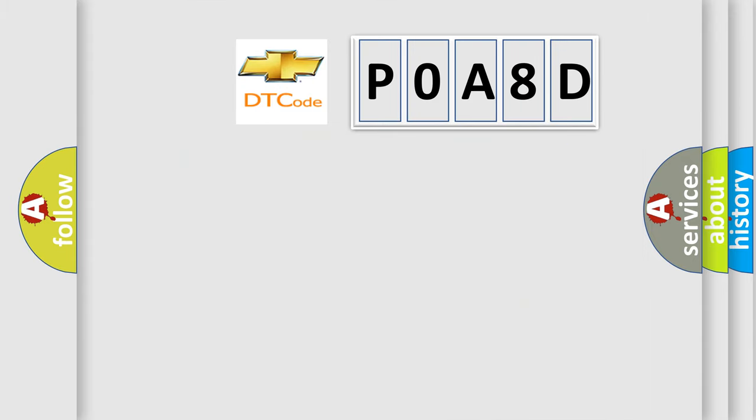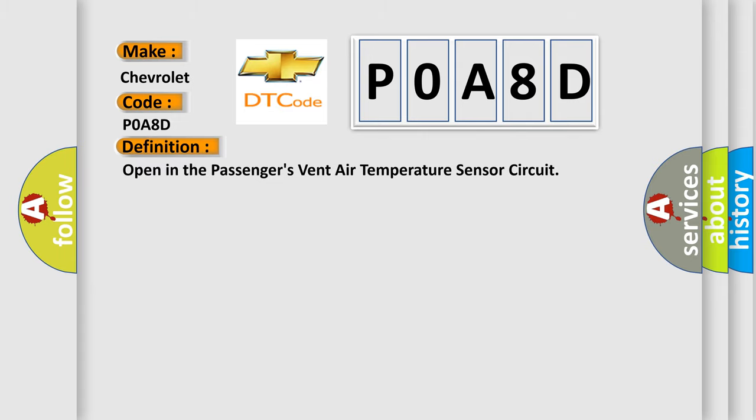So, what does the Diagnostic Trouble Code P0A8D interpret specifically for Chevrolet car manufacturers? The basic definition is open in the passenger's vent air temperature sensor circuit. And now this is a short description of this DTC code.